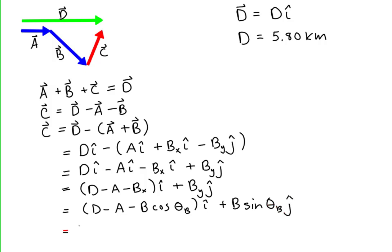We have taken this as far algebraically as we can, so let's now plug in numbers. 5.8 kilometers minus 2.0 kilometers minus 3.5 kilometers times the cosine of 45 degrees, that's all i-hat.